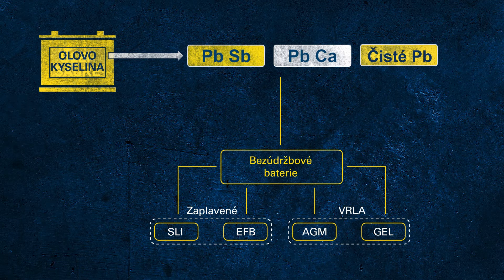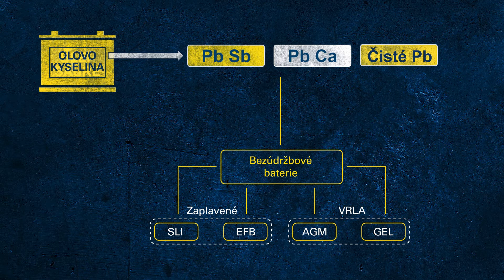In gel batteries, the electrolyte is not liquid but gel-like due to additives. These batteries use the same function principle as AGM batteries and therefore are also valve regulated.